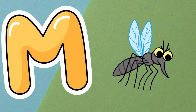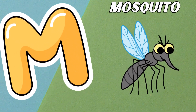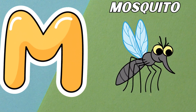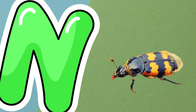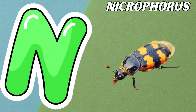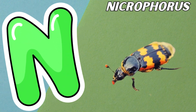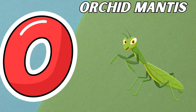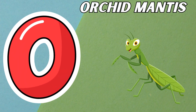M is for Mosquito. Mosquito. N is for Necrophorus. Na, Na. Necrophorus.